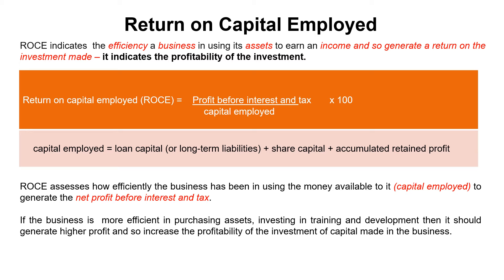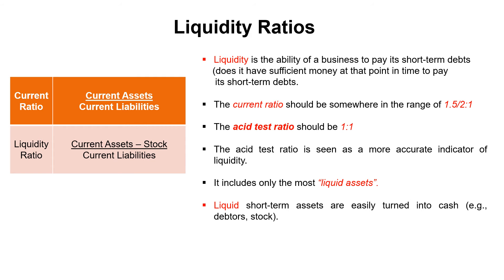Back to the basics: liquidity is the ability of a business to pay short-term debts — it's about cash flow. Cash is the lifeblood of the business; run out of cash and you basically go bust. There are two ratios: current ratio and acid test. For the current ratio, you'll find two possible benchmarks — 1.5 or 2:1. Two to one means two pounds of short-term assets for every one pound you owe.